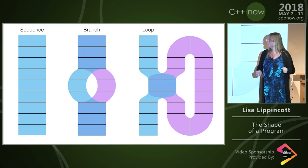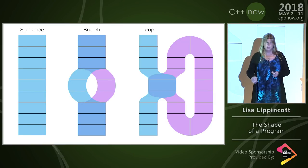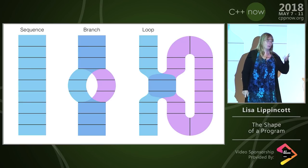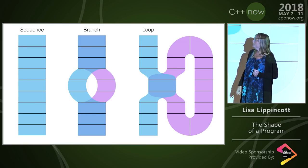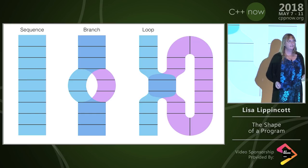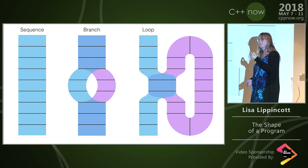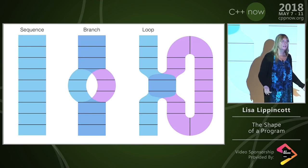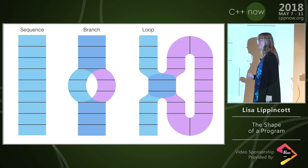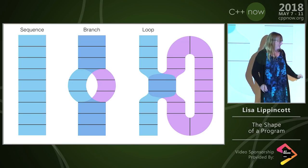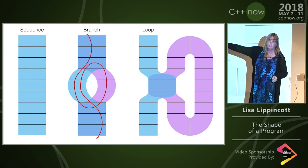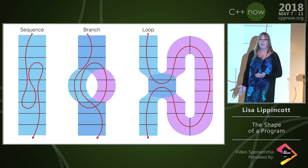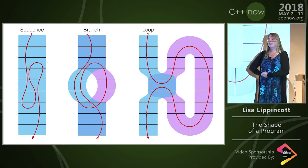But here we run into a problem. When I say this is a branch and this is a loop — or a sequence — I'm appealing to your intuition about time. Time is very important to procedural programming, and these pictures and the topology underneath are about space. Space isn't like time because time is directional. There is only one direction and time is its only measure. So we need something that keeps you from treating your branch or loop in the wrong direction.